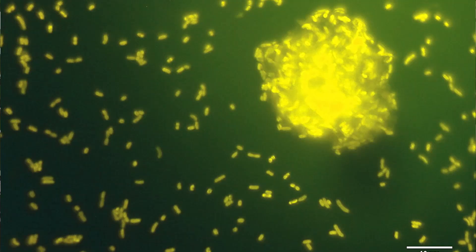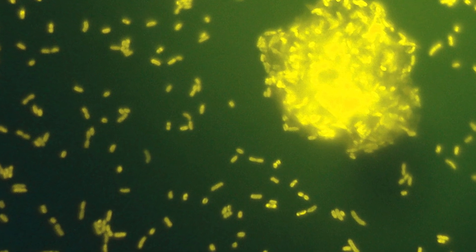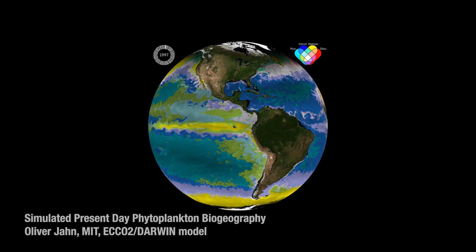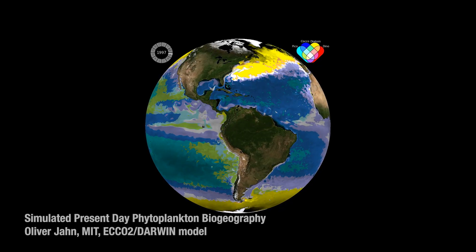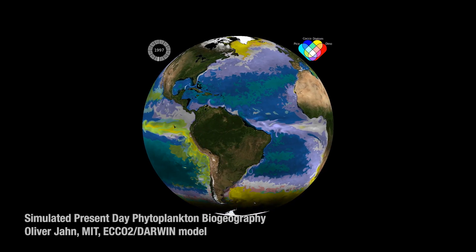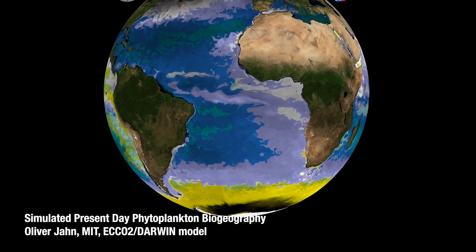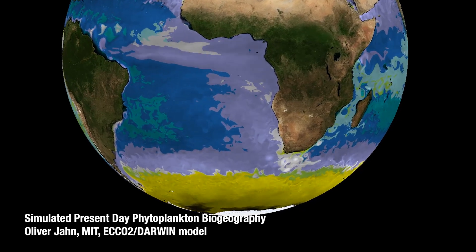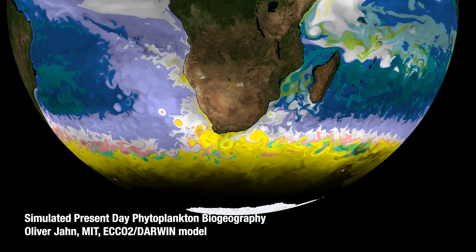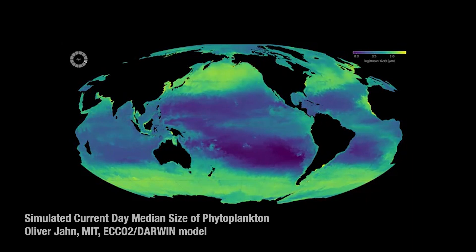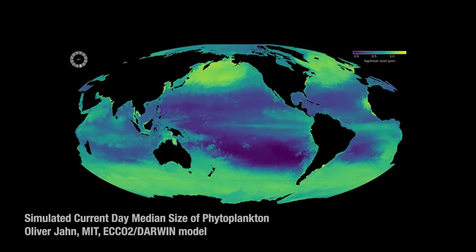The ocean supports an enormous diversity of life, including phytoplankton — microscopic plants at the base of the food web that generate half the oxygen we breathe. Phytoplankton are an incredibly diverse set of organisms, living in different combinations across the ocean, and both ocean acidification and warming are going to change where they can live and what combinations can coexist. Warming will push habitats poleward, while acidification may cause some species to grow faster and others slower, dramatically changing community structure and competitive dynamics.